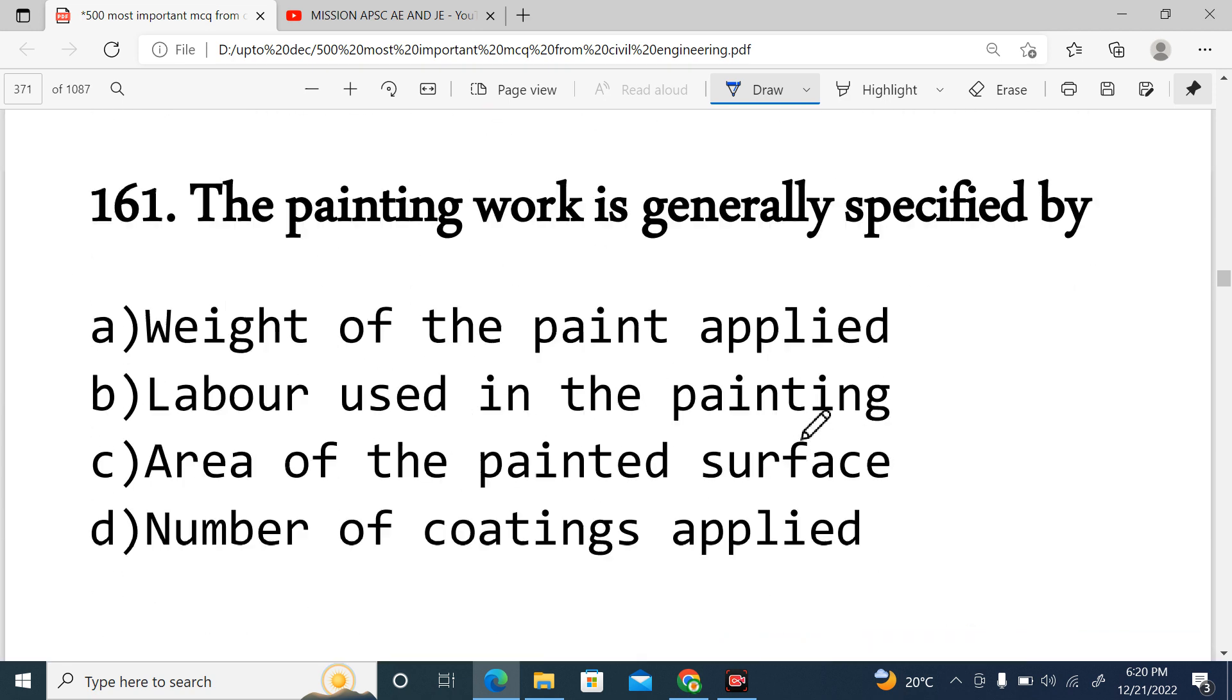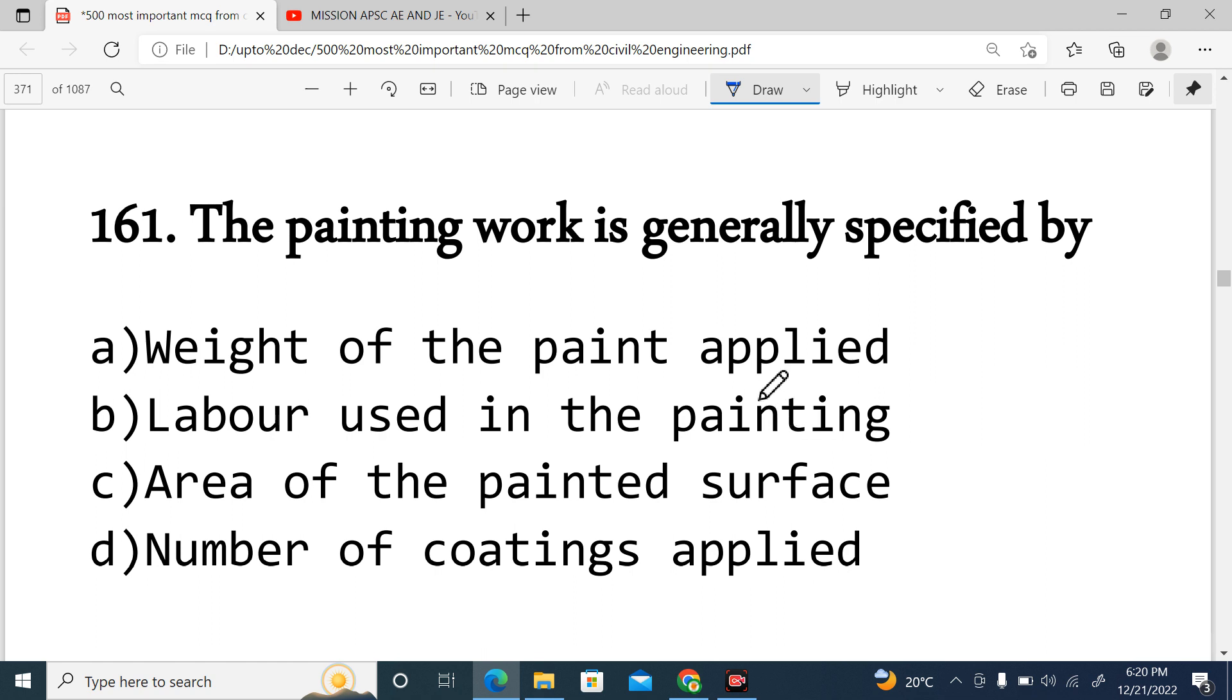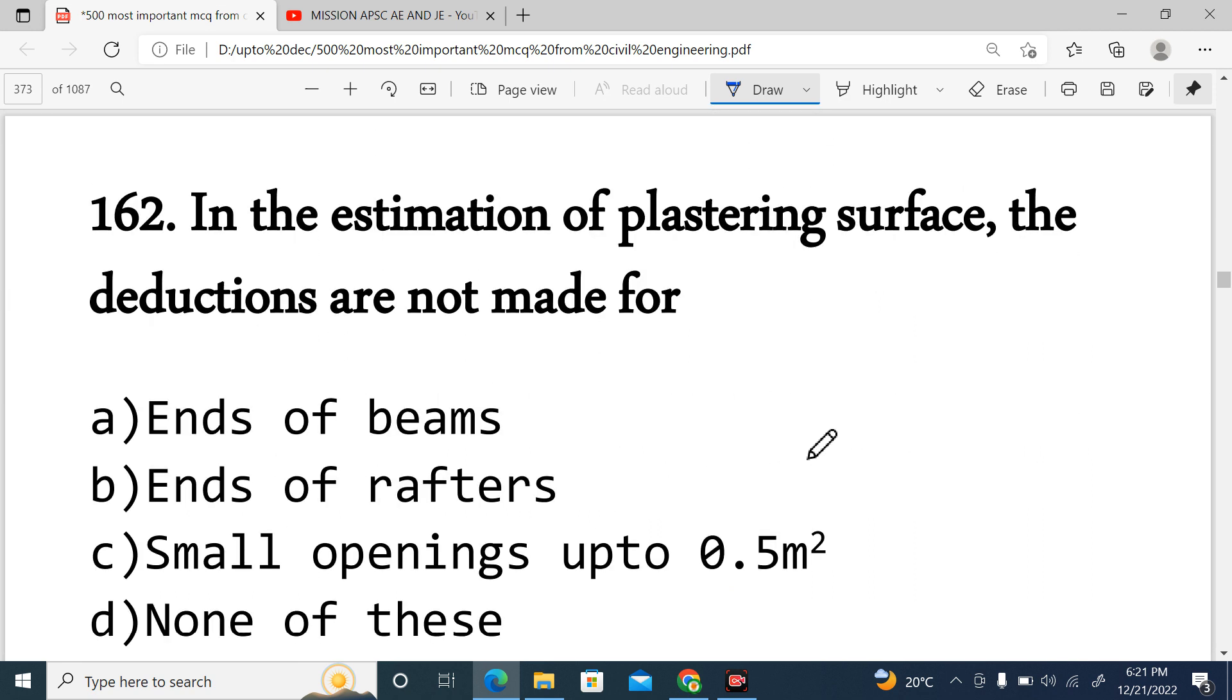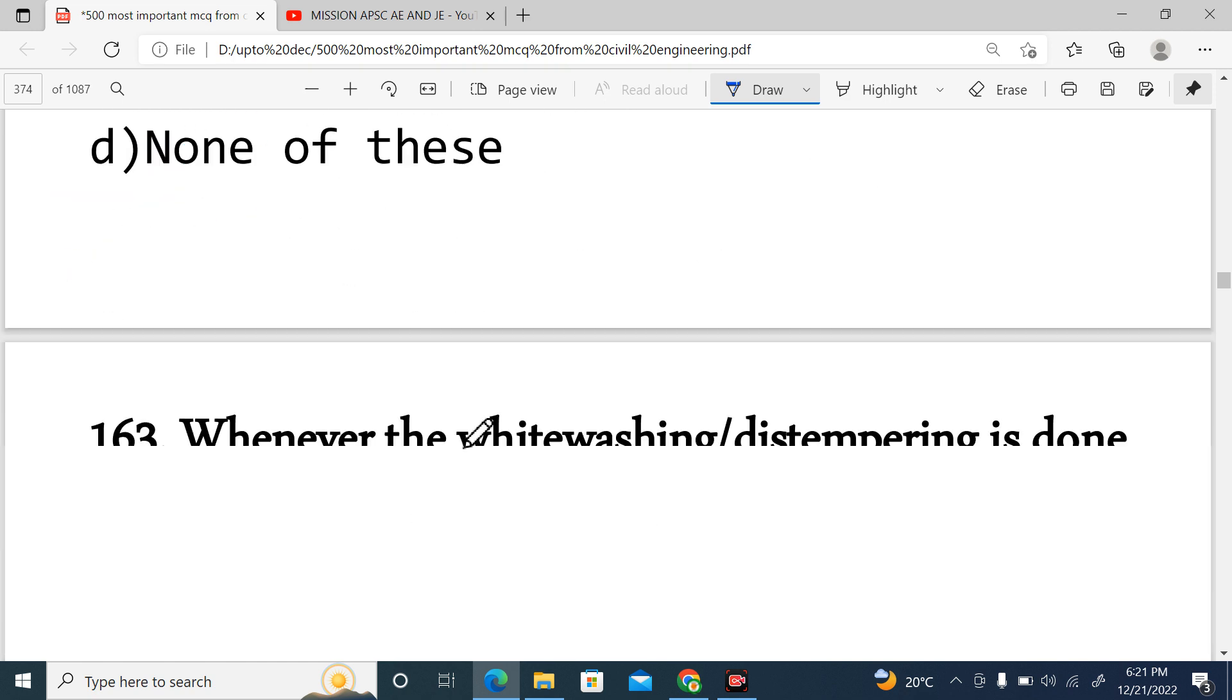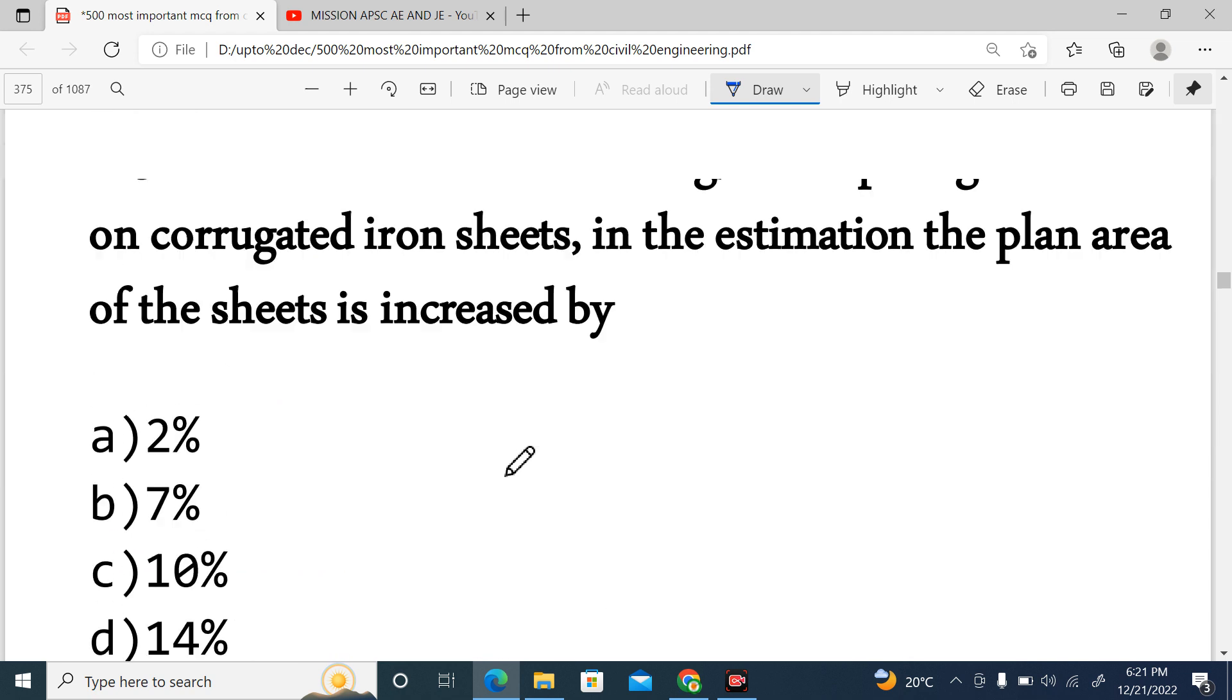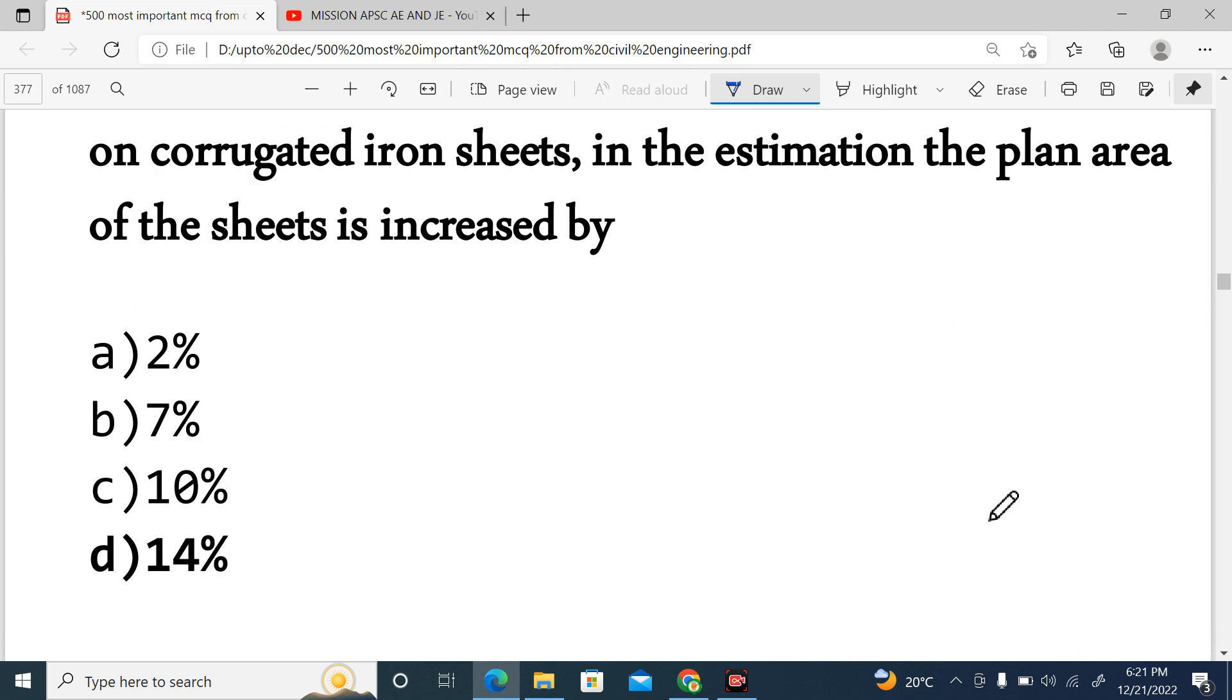Question 161: The painting work is generally specified by area of the painted surface. Next, Question 162: In the estimation of plastering of the surface, the deductions are not made for openings up to 0.5 meter square. Option C is correct. Next, Question 163: Whenever the whitewashing or distempering is done on a corrugated iron sheet, in the estimation the plan area of the sheets is increased by how much? For corrugated iron sheets, 14 percent increase. For corrugated asbestos cement sheet, 20 percent. Semi-corrugated is 10 percent. The answer is option D.